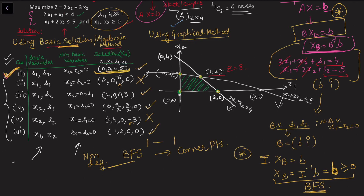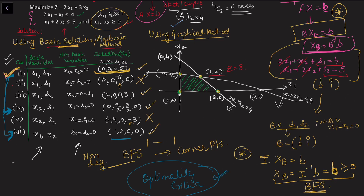In the simplex method, I start with this initial BFS but I do not check all six cases. Instead, I move from this solution to another basic feasible solution that gives an improved value of z. For example, from the initial BFS I may move to an adjacent BFS, then check the optimality criteria to see whether the current solution is optimal or further improvement is possible. This avoids checking all N-choose-M cases.